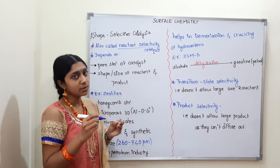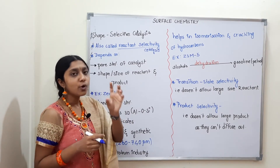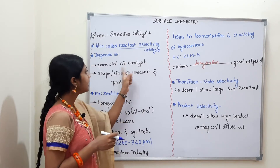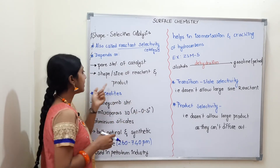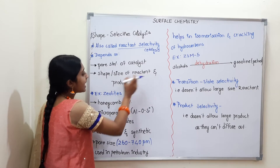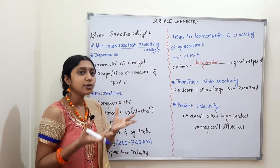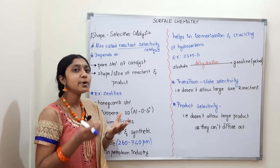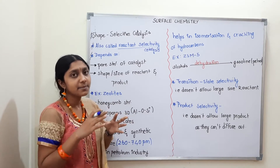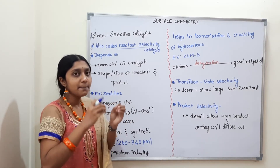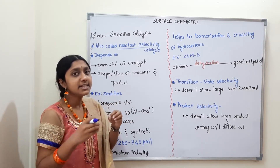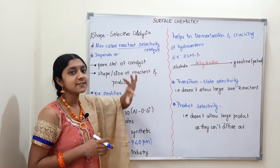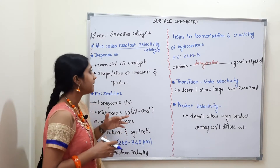The pores are holes. The catalysis depends on the pore structure, and it also depends on the shape and size of both the reactant and the product. The pore and delimitation of the catalyst depends on these shape and size factors. So it is called shape selectivity catalyst, or reactant selectivity catalyst.